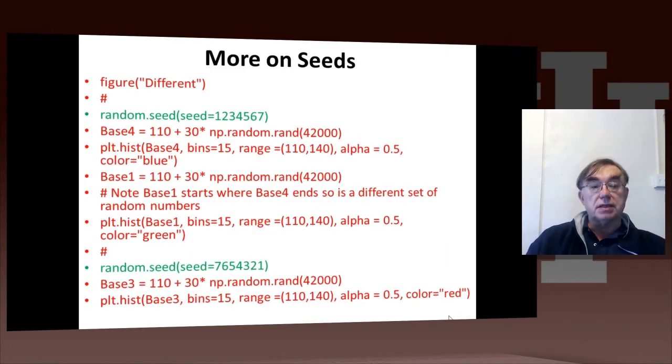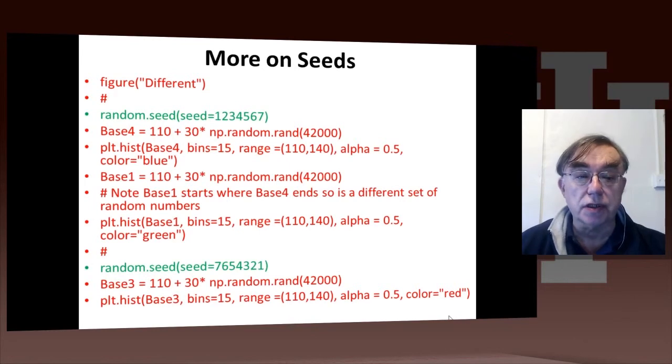So that could be contrasted with a different choice. Here we actually have three different random variables: base4, base1, and base3. Base4 is generated with the same seed we had before, 1234567, so it's actually equal to the previous distribution.